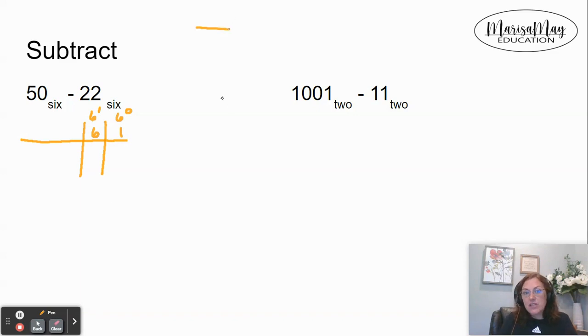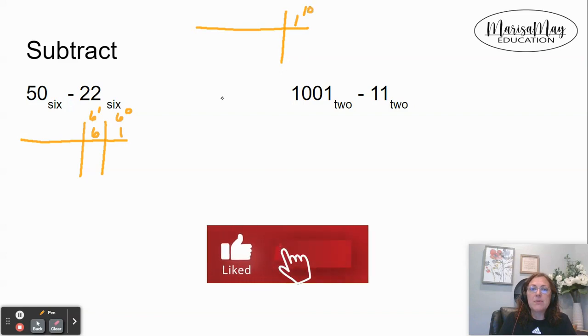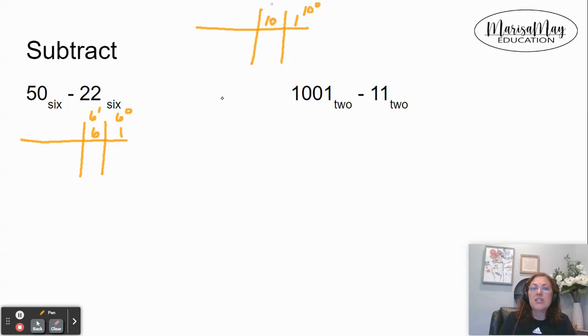If that's confusing to you, I want you to think about the base that you know. You know the ones place, but that really is 10 to the zero. And then you have the tens place, which is 10 to the first. And then you have the hundreds place, which really is 10 to the second.